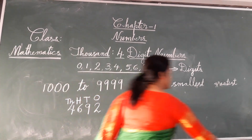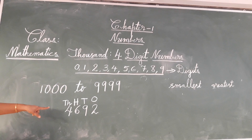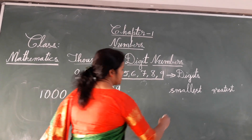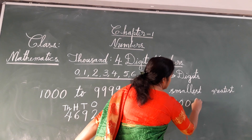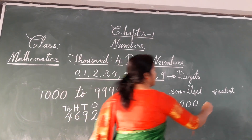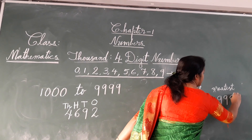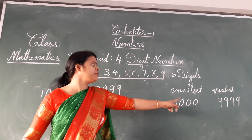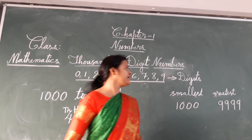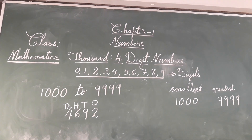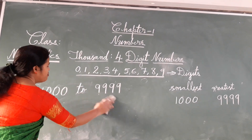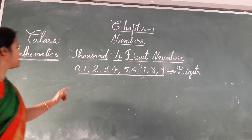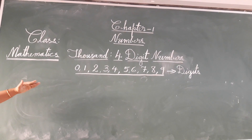Now, which number is the smallest four digit number? 1000 is the smallest four digit number and 9999 is the greatest four digit number. Now let's learn how to form a four digit number.